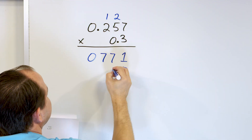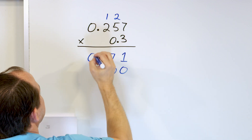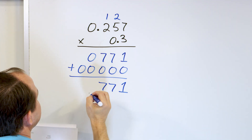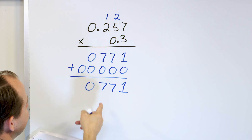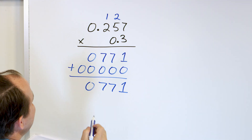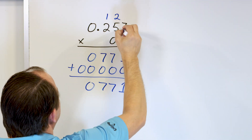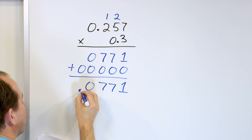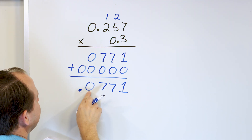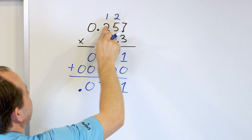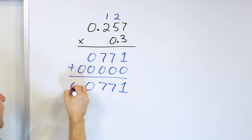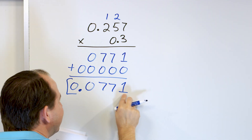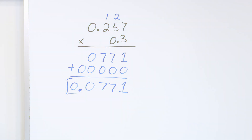Then we drop a 0 and multiply by 0, which gives zeros everywhere — it doesn't do much. Adding the rows gives us 1, 7, 7. Now, how many digits do I have after the decimal? 3 here and 1 here for a total of 4. So I have to have 4 digits after the decimal in my answer. The decimal point goes here so that I have 1, 2, 3, 4 digits after the decimal. Adding a leading 0 gives the final answer: 0.0771.